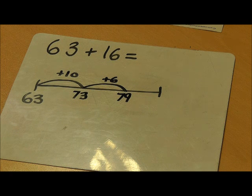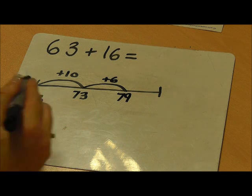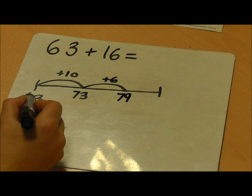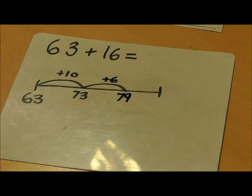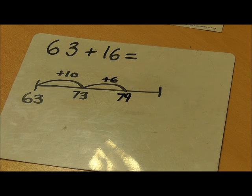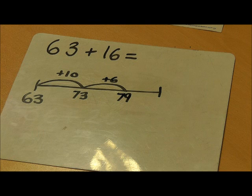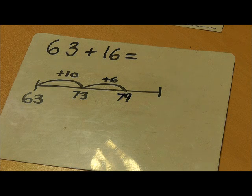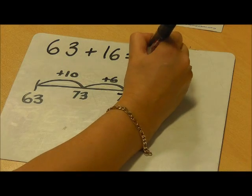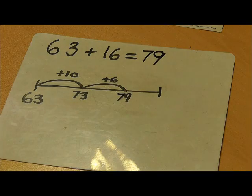So to recap, 63 adds 16. 63 is written at the start of my number line. I will then add 16 by partitioning into tens and units. Firstly, adding one ten to take me to 73, and then adding the units to take me to 79. The answer, 79.